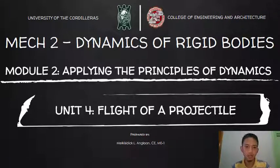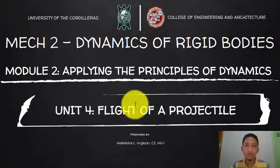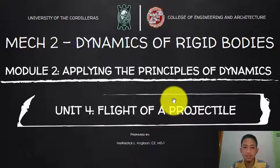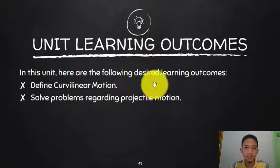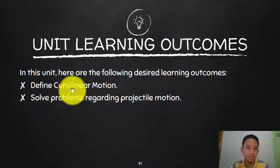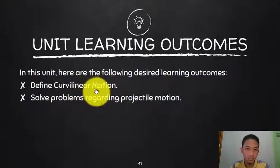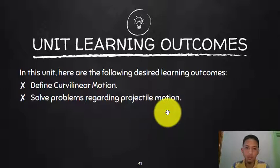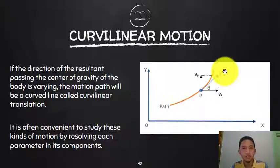Welcome back to Module 2. We will proceed with Unit 4: Flight of a Projectile. The desired learning outcomes are first to define curvilinear motion, which is already defined in the introduction, and then to solve problems regarding projectile motion.